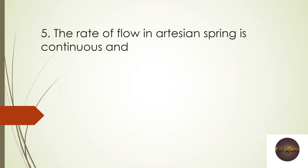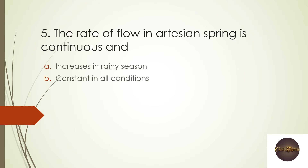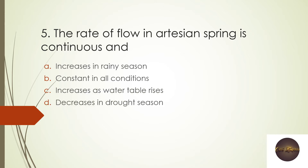Next question: The rate of flow in an artesian spring is — continuous, increases as the water table rises, decreases in a drought season. Among these options, in an artesian spring the flow is continuous and it increases as the water table rises.